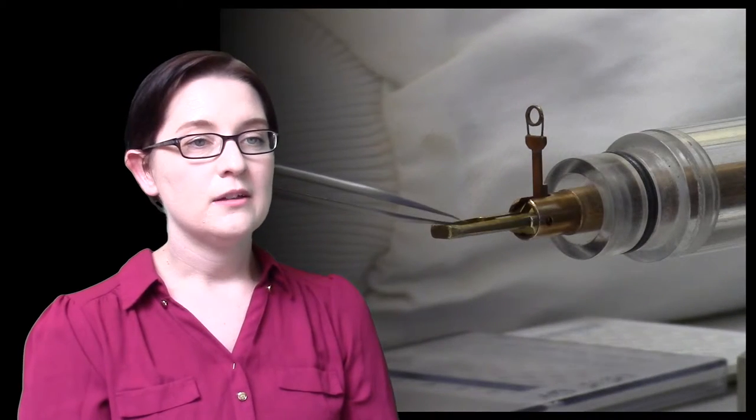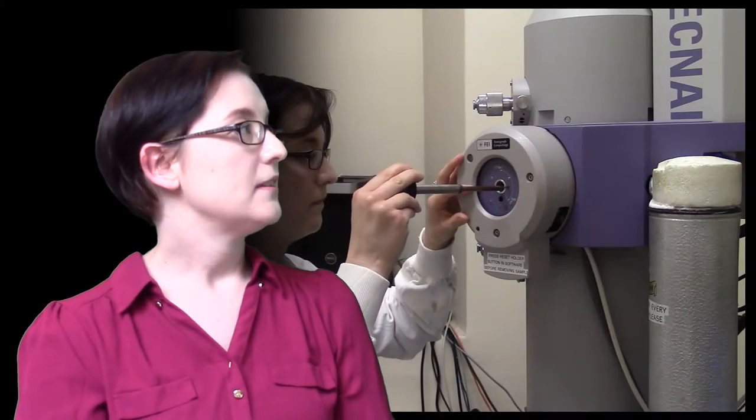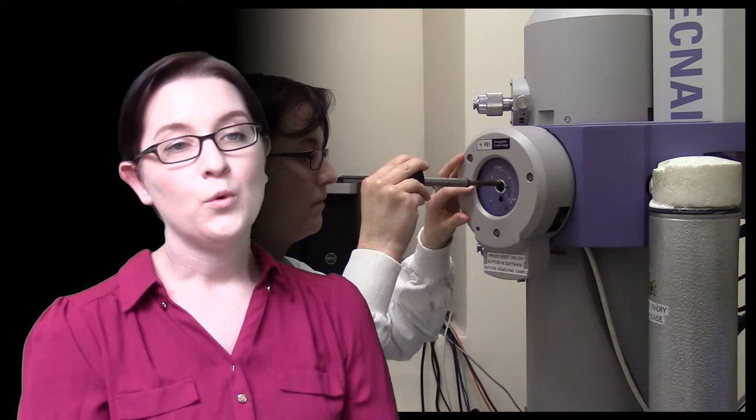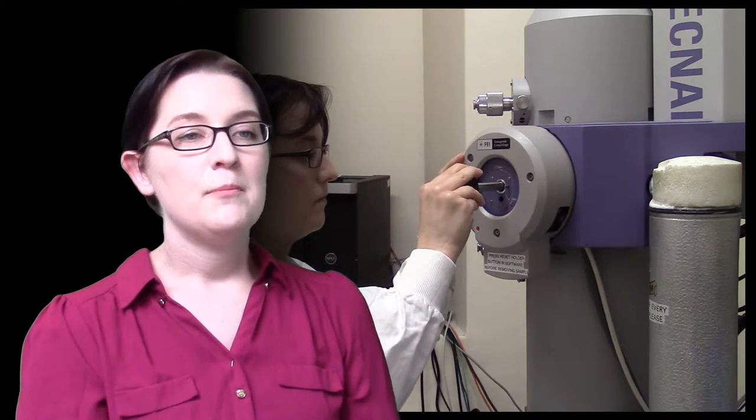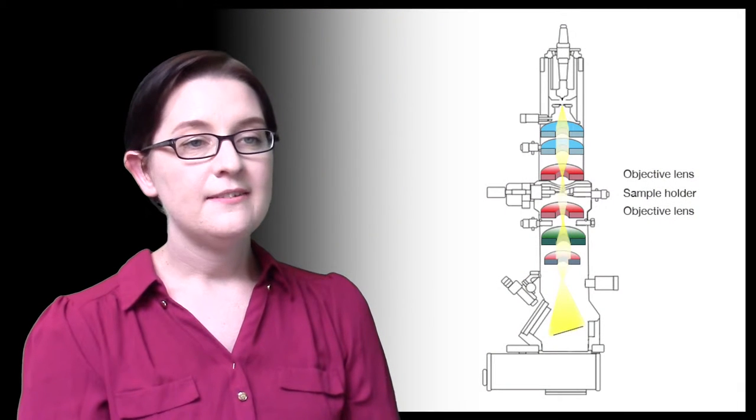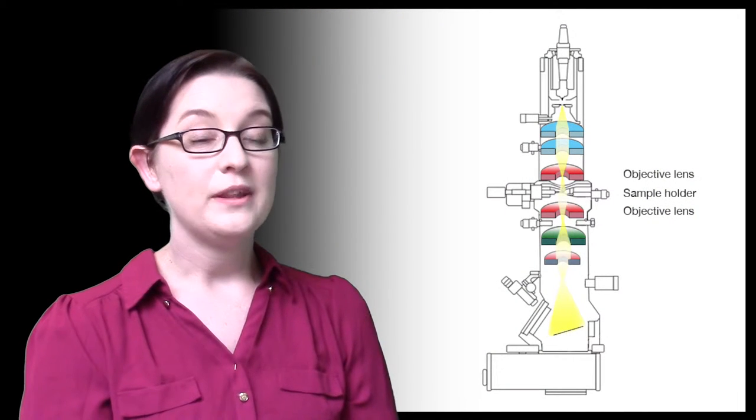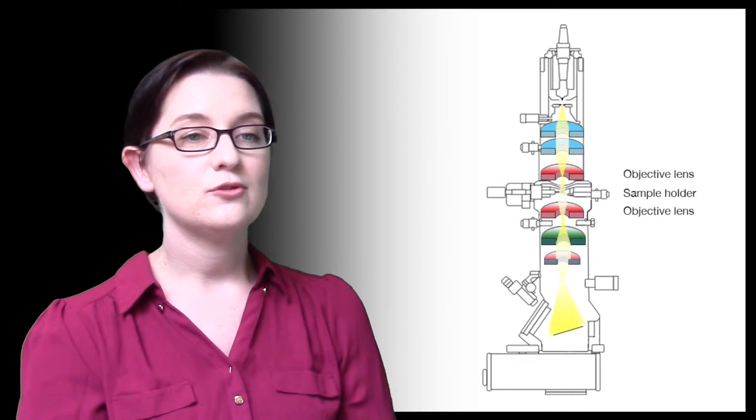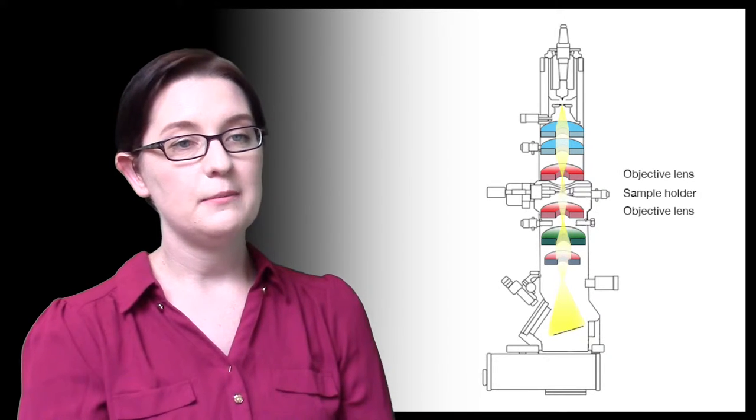The specimen on a TEM grid sits in a sample holder, which is inserted into the CompuStage, or eucentric goniometer, a motorized stage used to navigate around the grid. The end of the sample holder sits in the column within the objective lens, which focuses the electrons transmitted through it into an image.